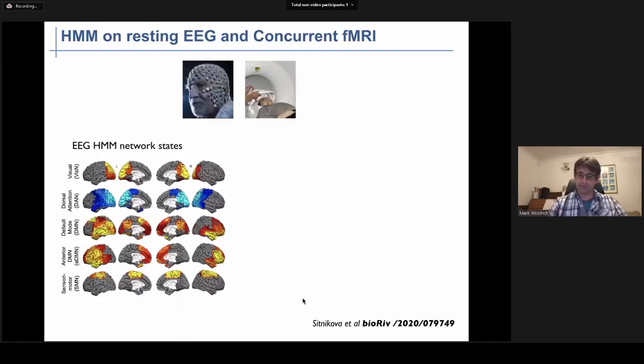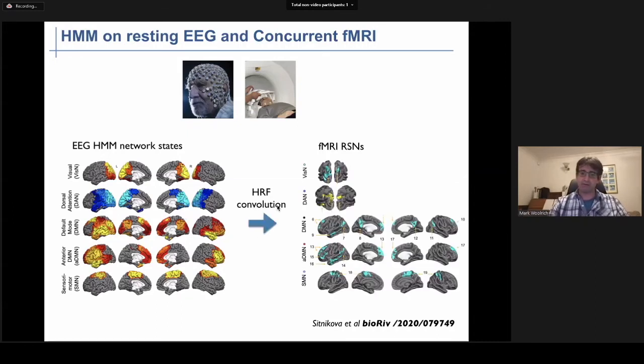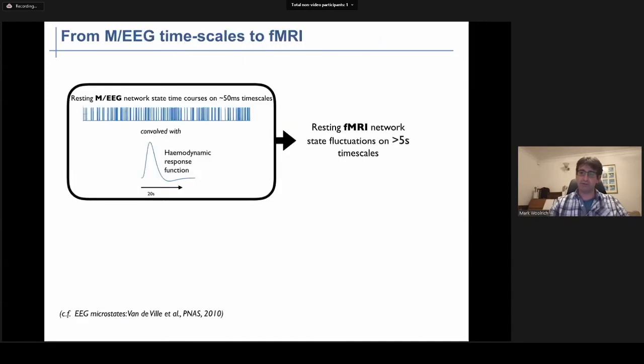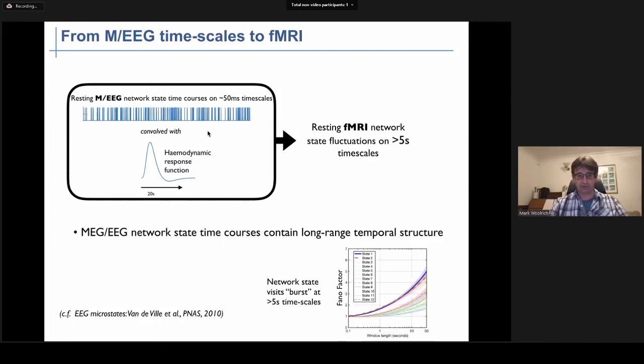This is what Tatiana Sitnikova and colleagues did fairly recently. They acquired concurrent fMRI and EEG data, computed EEG HMM network states which look pretty similar to what we've seen previously with MEG. They took the network state time courses and convolved them with a hemodynamic response function and correlated the resulting time courses with the fMRI data. They found from doing that there were good spatial maps in the fMRI that corresponded well with the spatial maps in the EEG network states. So this is a confirmation that at least to a reasonable extent this relationship is true.